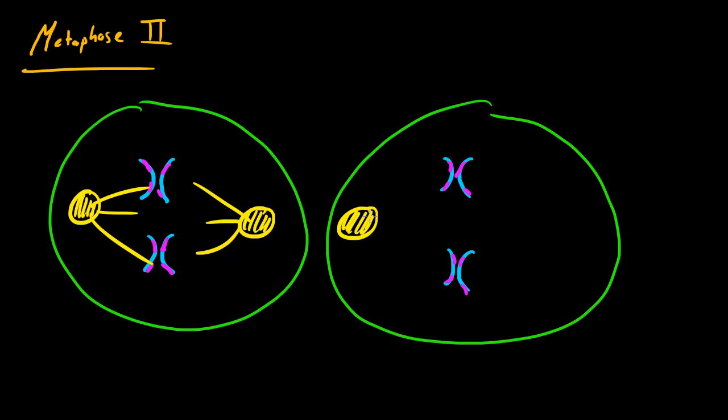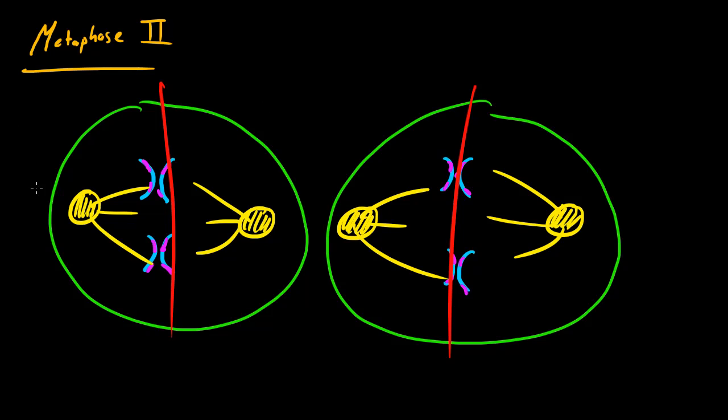Let me draw it on this cell too, so here are the spindles attaching to the centromeres right there. Another cool thing is that the sister chromatids are actually going to line up in the middle or the equator of the cell. So those are the two key aspects of metaphase 2: the spindles attach to the centromeres of the chromosomes and the sister chromatids line up in the middle or equator of the cell.